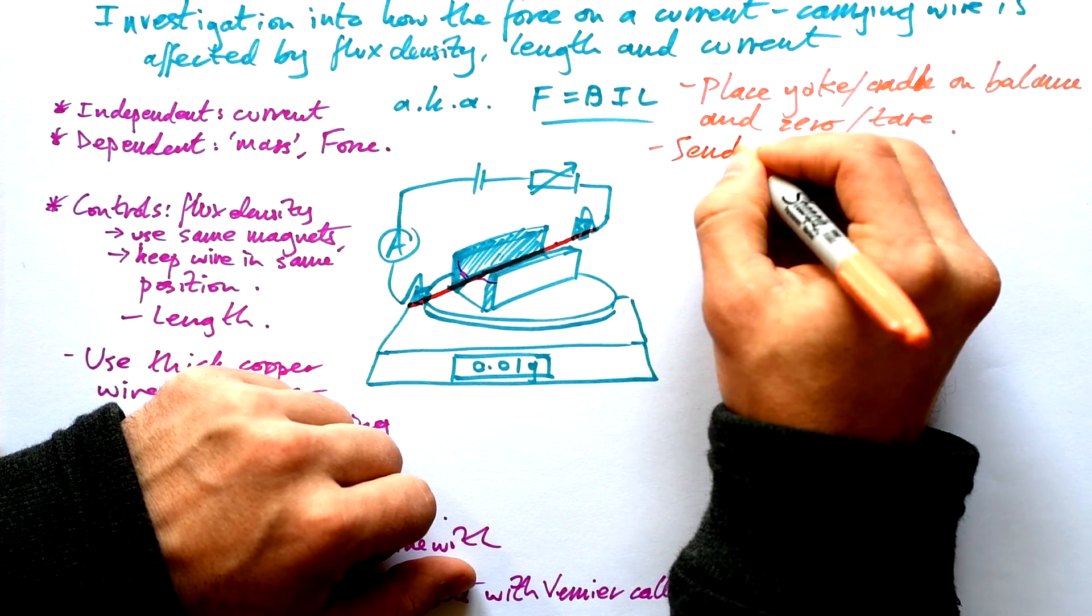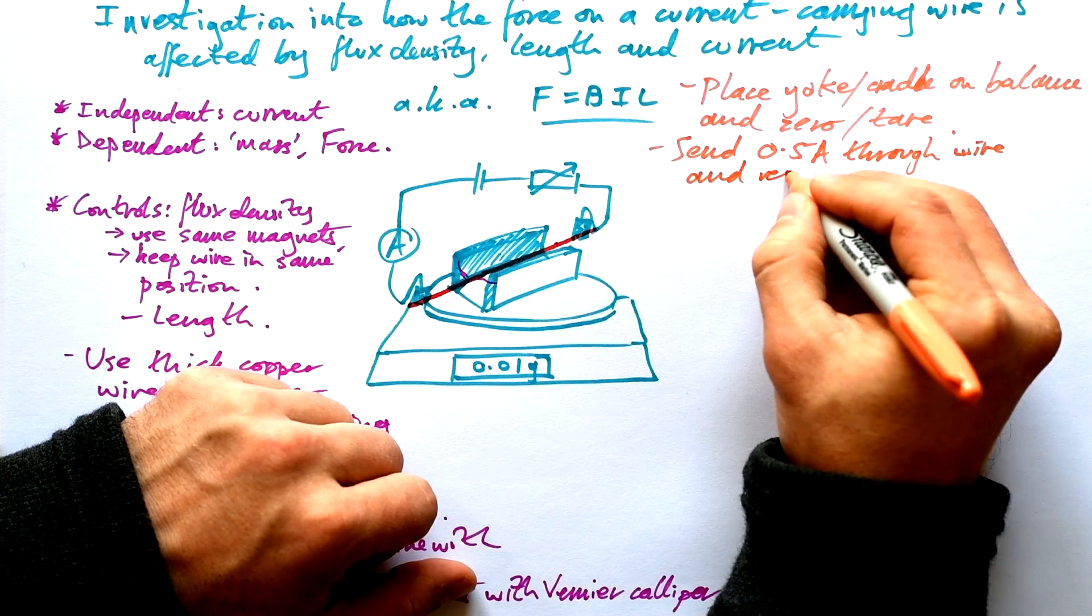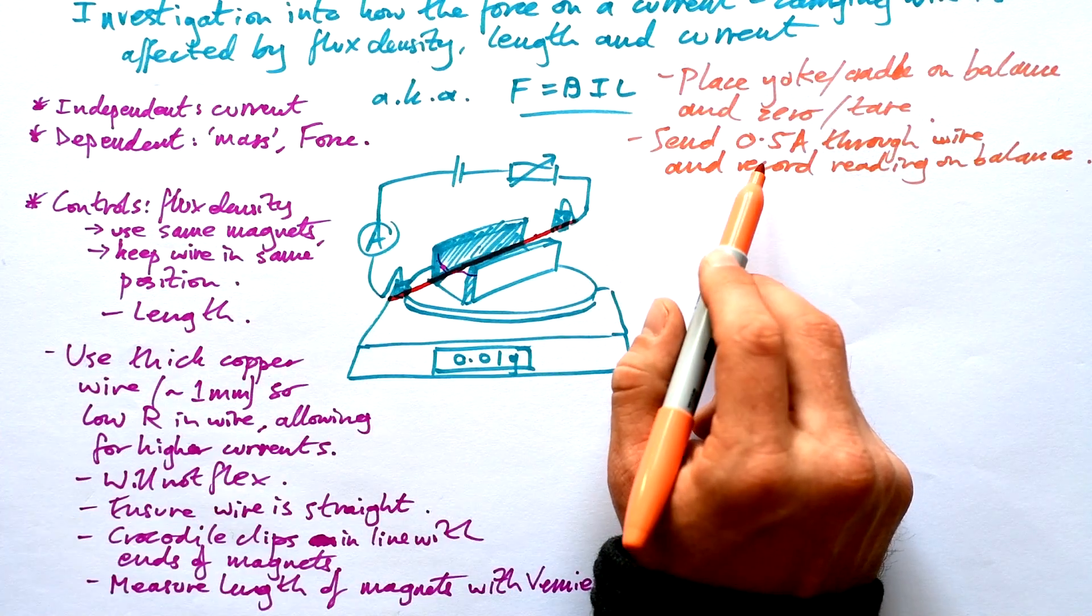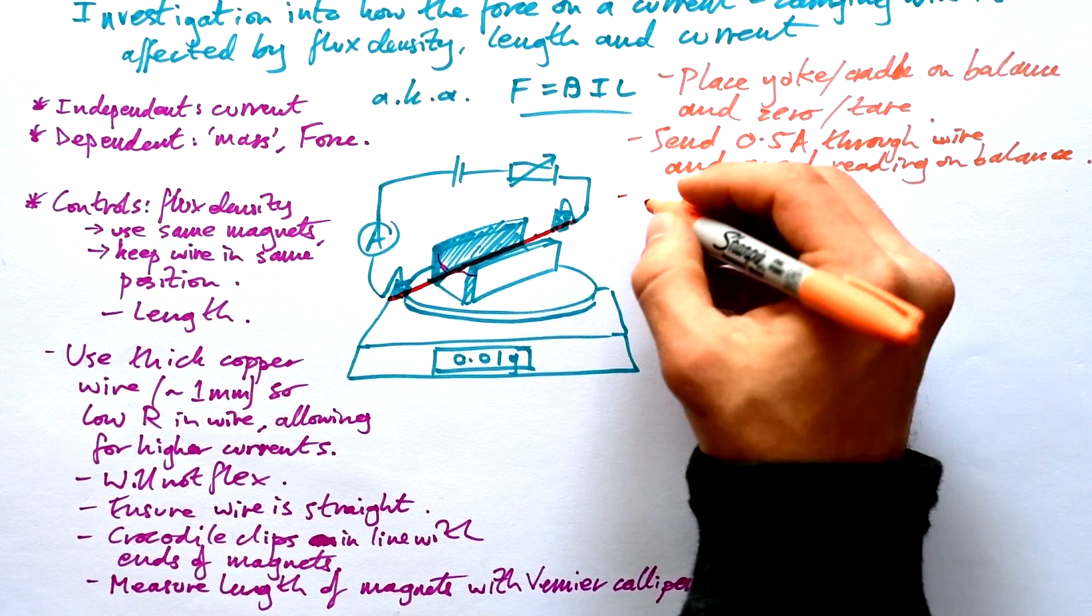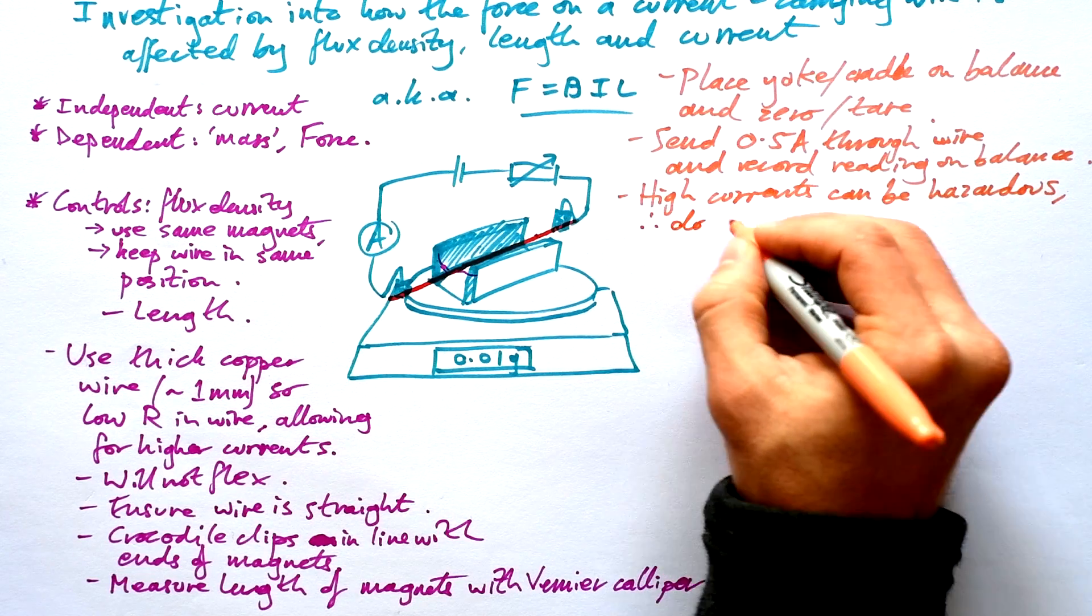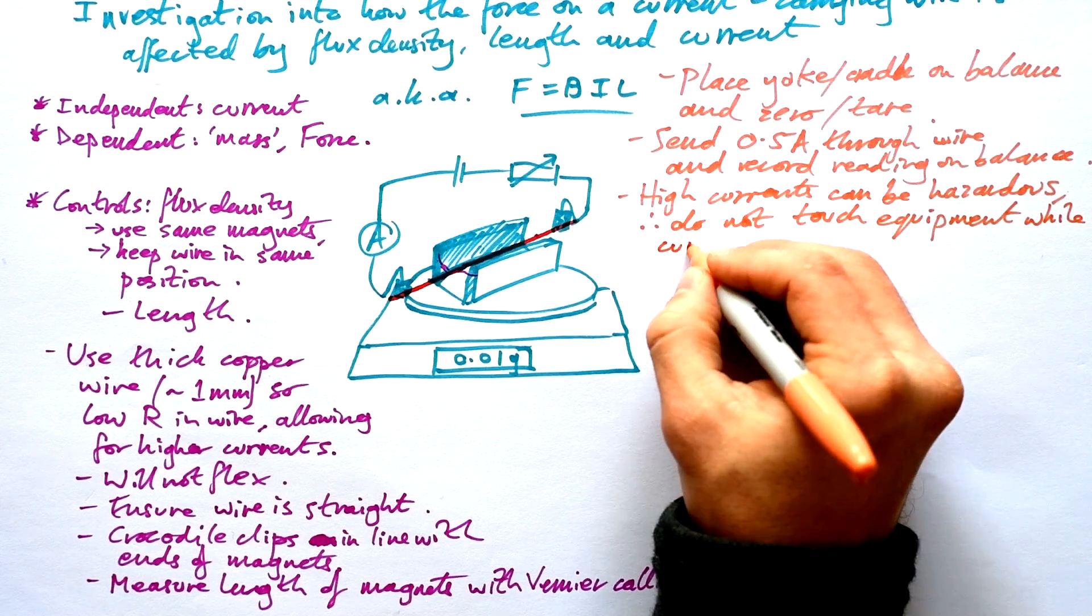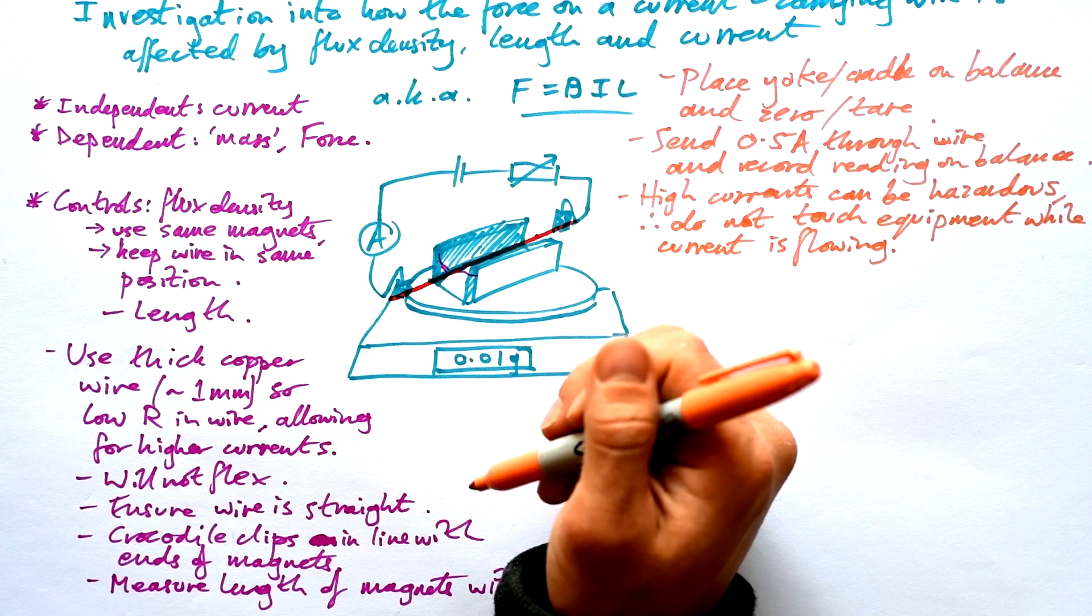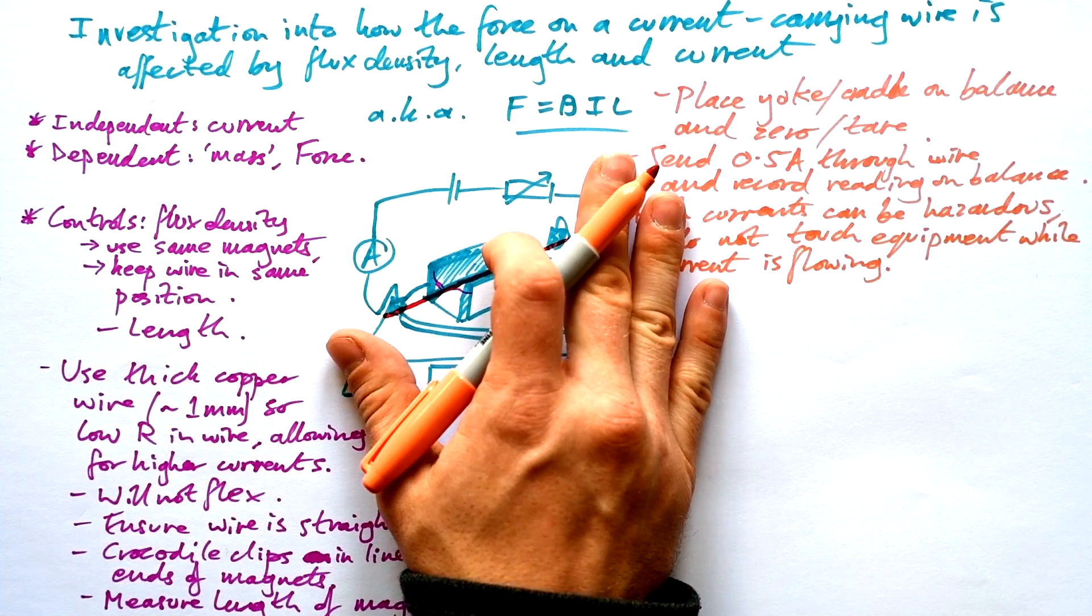So what we're going to do then is send let's say 0.5 amps through the wire and record reading on balance. Now it doesn't really matter what increments you use and the maximum however just be aware that high currents can be hazardous, can cause electric shocks, therefore do not touch equipment while current is flowing. Honestly you still should be okay because the current wants to go down the wire rather than you, but better safe than sorry.